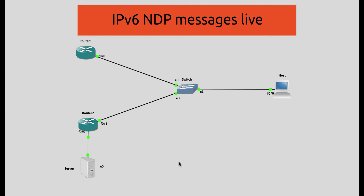Those five messages are: neighbor solicitation, neighbor advertisement, router solicitation, router advertisement, and the redirect message. Neighbor solicitation messages are sent by devices on the link to query other devices' parameters like the MAC address. Meanwhile, the neighbor advertisement is sent to share information about the host. Router solicitation is sent to query parameters on the network and also to look for available routers on the link that can act as default gateways. The router advertisement is sent by routers to share that information as well as present themselves on the network to perform default gateway functions. The redirect message is used by routers to inform hosts of a better routing option on the link.